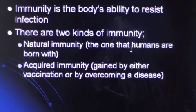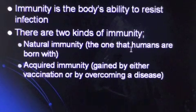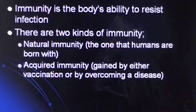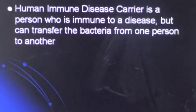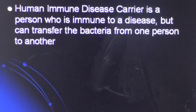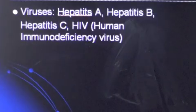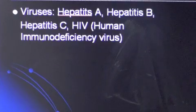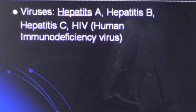Immunity is the body's ability to resist infection. There are two kinds of immunity: natural immunity, the one that humans are born with, and acquired immunity, gained by either vaccination or by overcoming a disease. A human immune disease carrier is a person who is immune to a disease but can transfer the bacteria from one person to another. Viruses that cosmetologists are concerned with are hepatitis A, hepatitis B, hepatitis C, and HIV (human immunodeficiency virus), which causes AIDS.